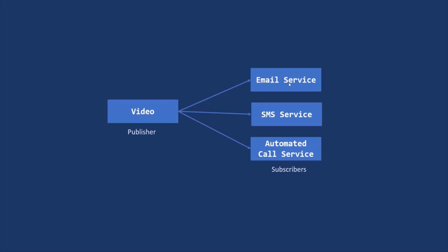Once the Subscriber receives the notification, they can execute some logic. For example, the Email Service can send an email to all the users, notifying them that the video is completely uploaded. In the same way, the SMS Service is responsible for sending an SMS, and the Automated Call Service is responsible for sending an automated call to the users, telling them the video is completely uploaded.